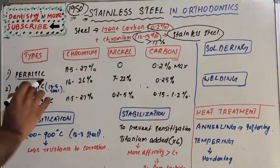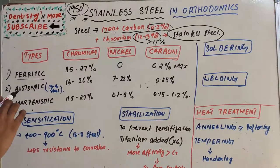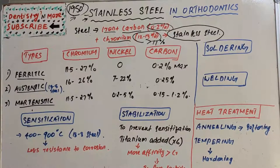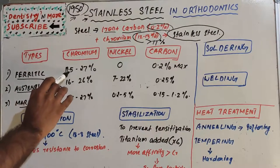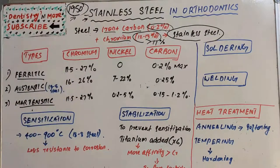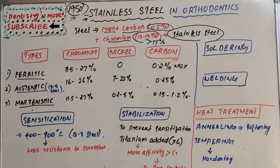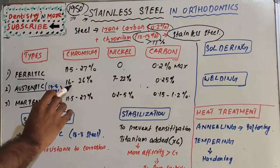We have three major types of stainless steels classified based on their crystal structure arrangement: ferritic, austenitic, and martensitic. The first one, ferritic, has chromium in the range of 11.5 to 27%, there is no nickel, and carbon is around 0.2% at maximum range.